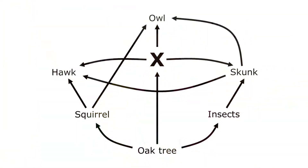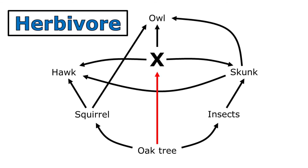So to determine what type of organism I should replace the X with, I just need to look at what this organism consumes. When I look at this food web, I can see that this organism consumes the oak tree. That tells me that this organism must be an herbivore because it only eats plants.